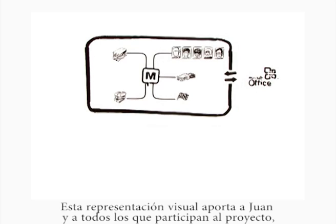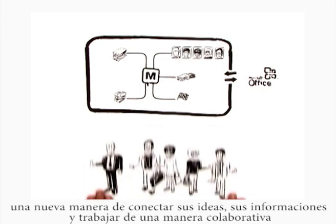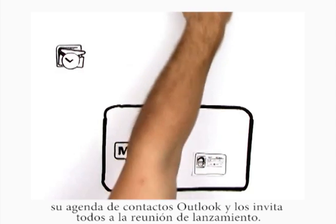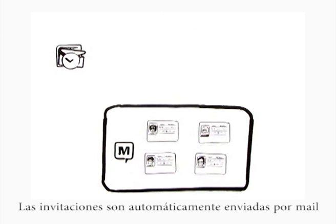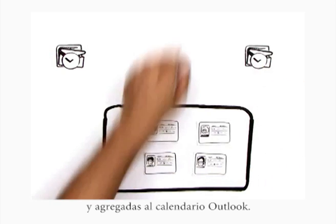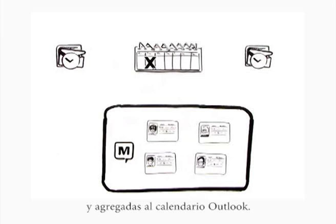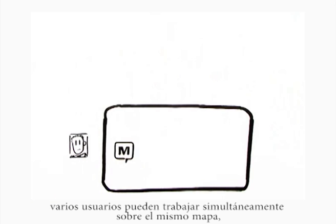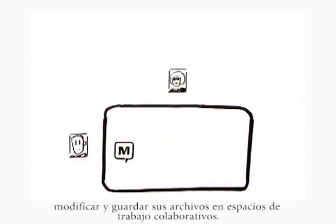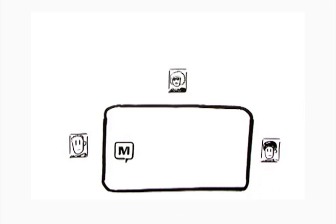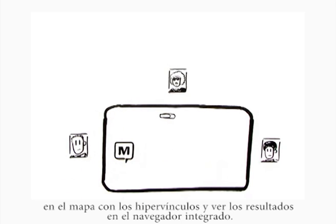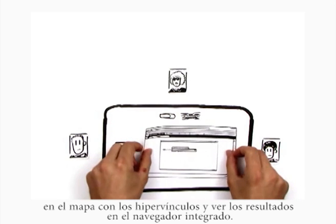The clear overview that the application provides will not only help Paul, but also everyone involved in the project. Paul imports the team members into the map from his list of contacts in Microsoft Outlook, and invites everyone to the kick-off meeting. The invitations are sent out automatically by email, and the meeting is displayed in Microsoft Outlook. Since Paul's company uses the MindJet Connect service, several users can work on the same map at the same time and store and edit their files in the same workspaces. This means that Hillary can immediately store her initial Google search query results in the map's document directory, with hyperlink and result displayed in the integrated browser.